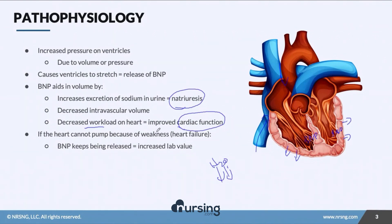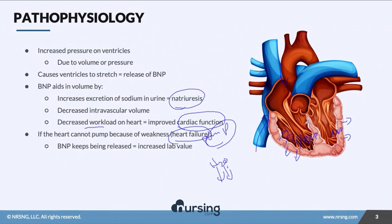But if the heart can't pump because of a weakness — for example, heart failure or pump failure — BNP keeps being released. The heart starts signaling: it really needs to get rid of all this volume. And that lab value continues to climb as the ventricles continue to stretch because of the pump failure and heart failure.